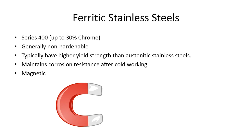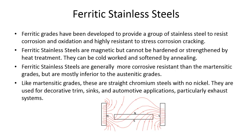Ferritic stainless steels are Series 400, with up to 30% chrome, generally non-hardenable, and they are magnetic. They typically have higher yield strength than austenitic stainless steels and maintain corrosion resistance after cold working. Ferritic grades were developed to provide a group of stainless steels that resist corrosion and oxidation and are highly resistant to stress corrosion cracking. They cannot be hardened or strengthened by heat treatment but can be cold worked and softened by annealing. They are used for decorative trim, sinks, and automotive applications, particularly exhaust systems.